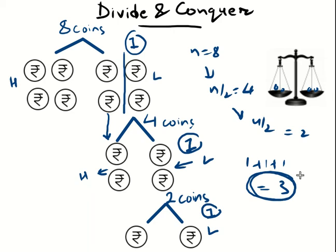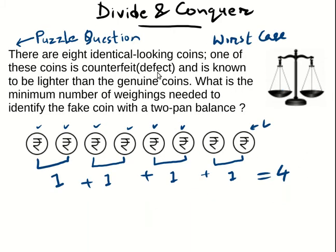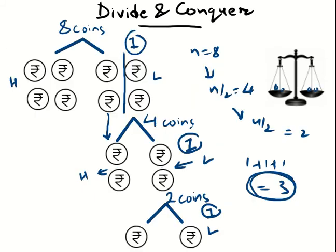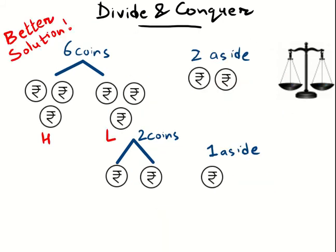So for this question, three weighings is an improvement over four — but is it the best solution? Can we improve upon it? If you modify the divide and conquer technique slightly, you can actually do even better. Let us see: out of eight coins, set two coins aside and work with the remaining six coins.